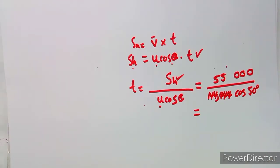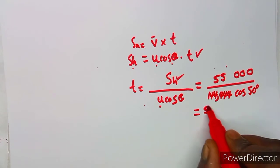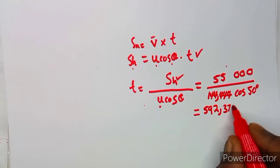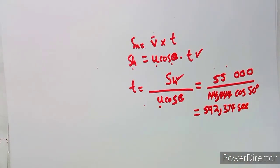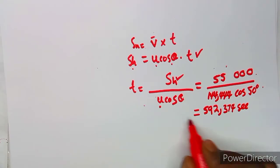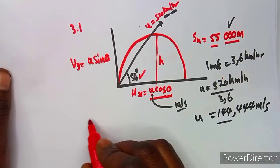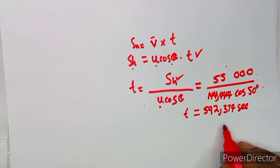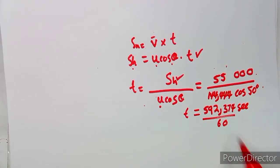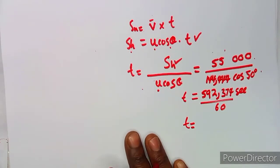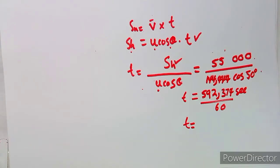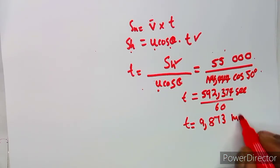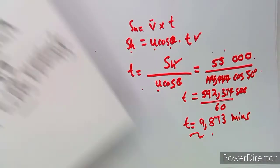It is a great advantage to know which formulas to use. This gives us approximately 592.374 seconds, which we round to 592.37 seconds. Since the question asks for time in minutes, we divide by 60, giving approximately 9.873 minutes, which rounds to 9.873 minutes. This is our time in minutes.